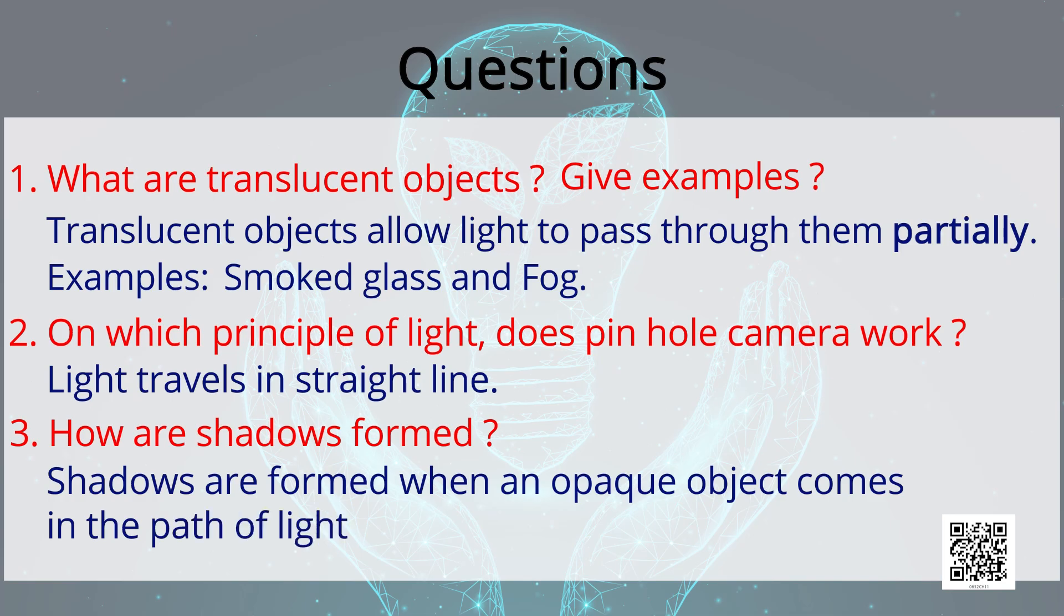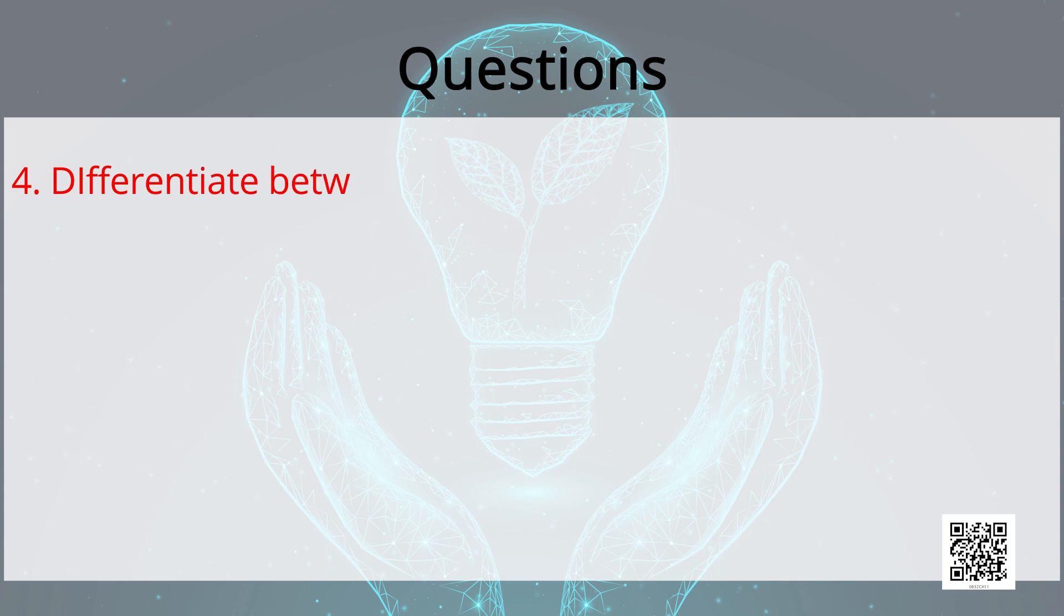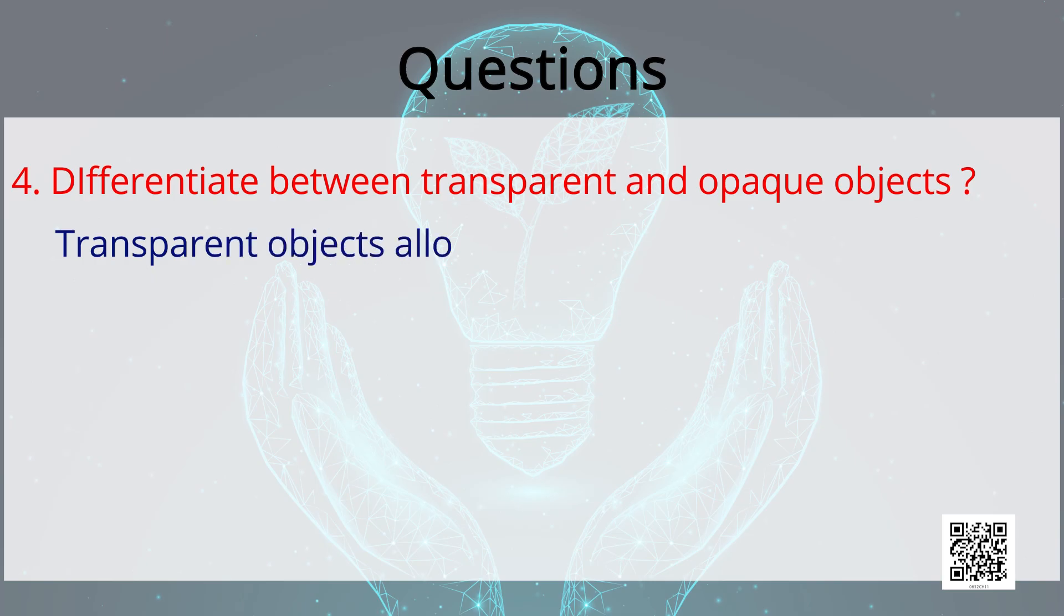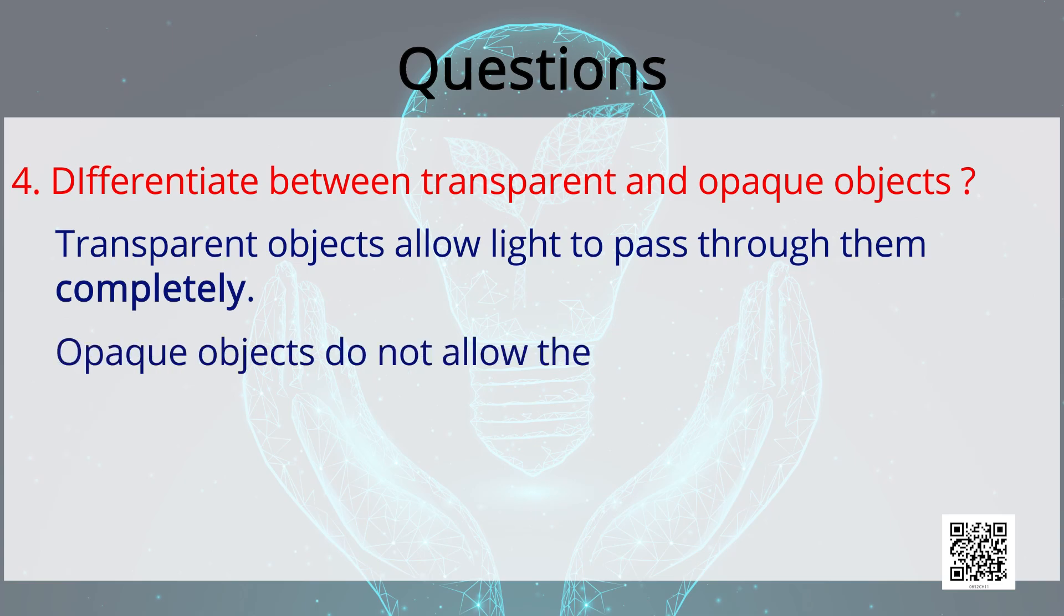My next question is the difference between transparent and opaque objects. The difference between transparent and opaque objects are transparent objects allow the light to pass through them completely whereas opaque objects do not allow the light to pass through them. We are able to see clearly through transparent objects whereas we cannot see through opaque objects.